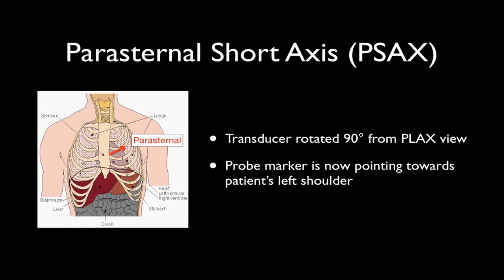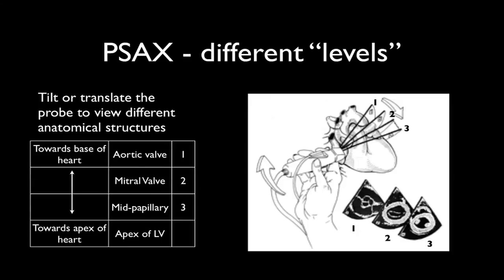The parasternal short axis is obtained by rotating the transducer 90 degrees from the long axis, so instead of the probe marker pointing to the right shoulder, it now points to the patient's left shoulder. There are different levels of this view depending on the tilt or position of the probe — one can move towards the base to display the aortic valve in cross-section, then progressing towards the apex to display the mitral valve, then the mid-papillary left ventricular view, and finally the apex of the left ventricle.